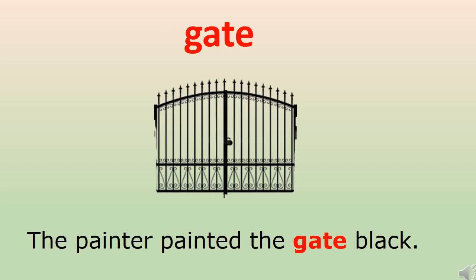The next word is 'gate.' The meaning of gate is a big door which is part of a fence or a big wall — like in our society you must have seen a big gate. Let's use gate in a sentence: 'The painter painted the gate black.'